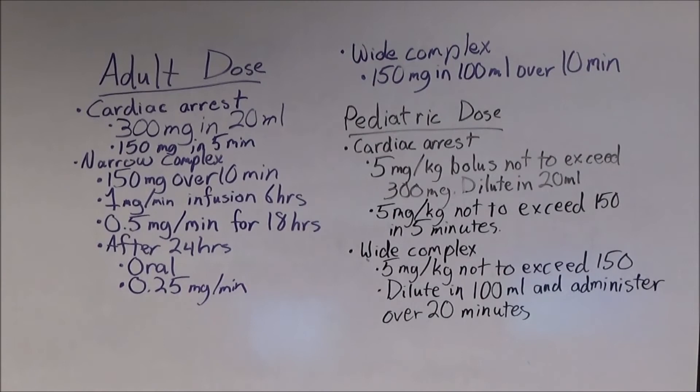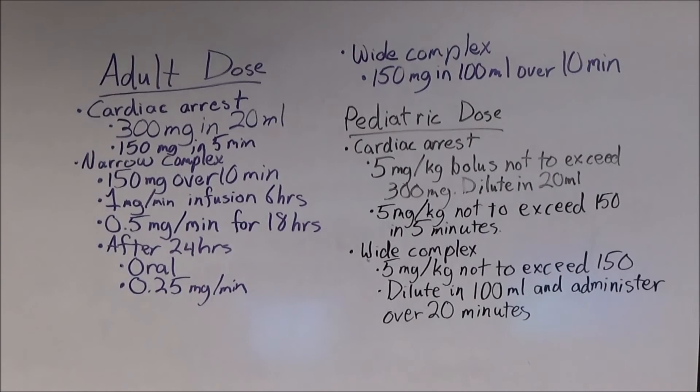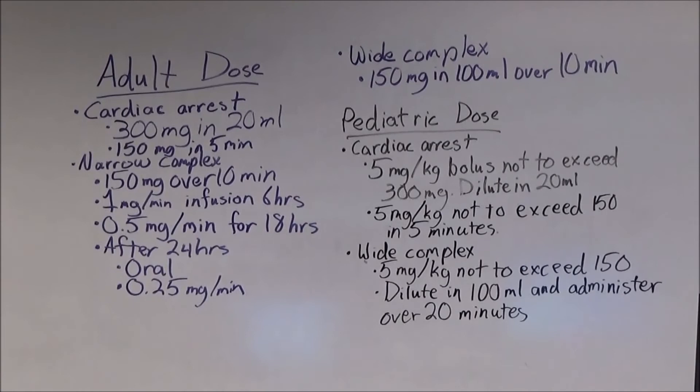Stable refractory narrow complex tachycardia is generally not treated with amiodarone in the field. PDR.net recommends giving patients 150 mg over 10 minutes. This is followed by 1 mg per minute continuous infusion for 6 hours, then 0.5 mg per minute for 18 hours. After 24 hours, the patient should be changed to oral amiodarone or decreased to 0.25 mg per minute.